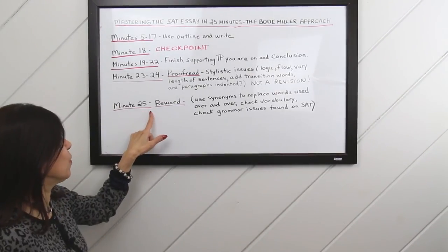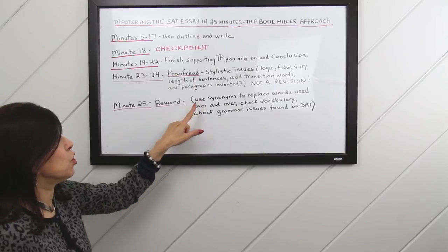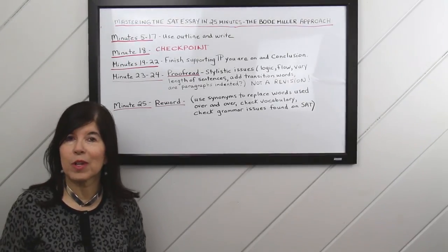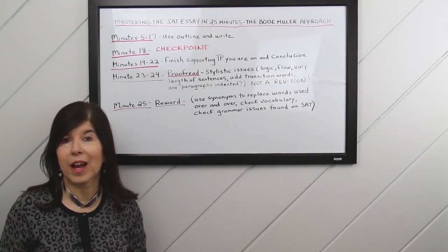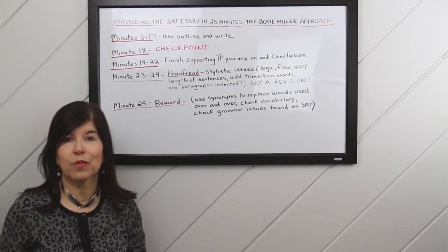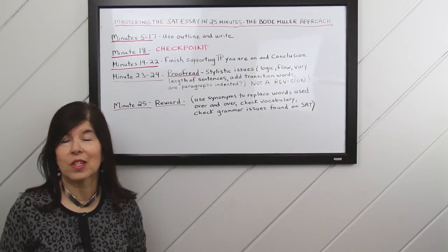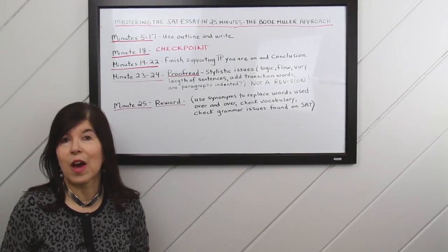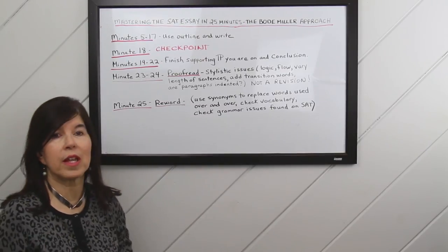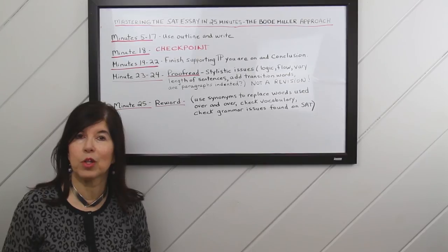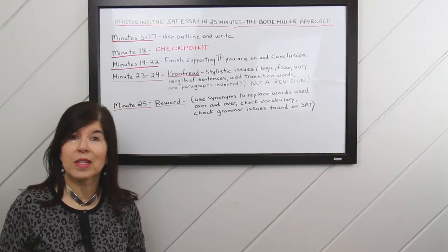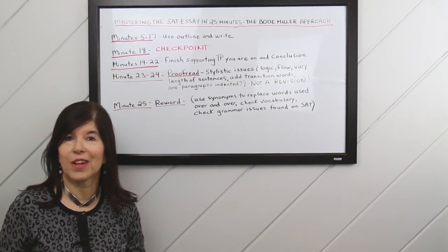And then the last minute, you're going to reword. Use synonyms to replace words that you've used over and over. Check your vocabulary and you might want to change a couple words to be more academically advanced, more college level, like maybe instead of laziness, indolence, or detrimental instead of not good. You also want to check grammar issues that are found on the SAT. Common ones like subject-verb agreement, ambiguous pronouns, verb tenses, parallel structure. So that's the last minute you want to take care of that business.